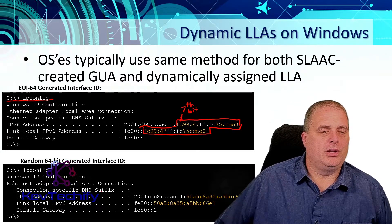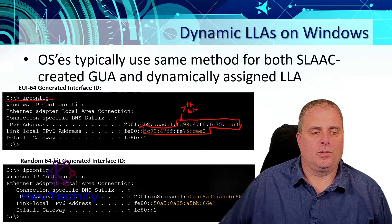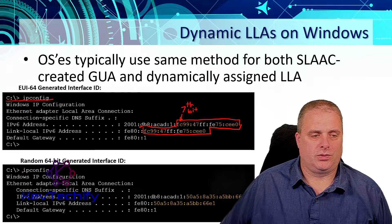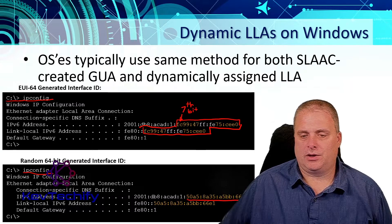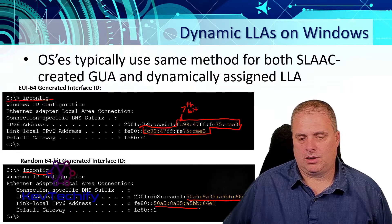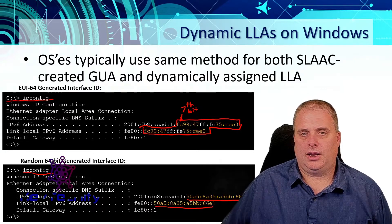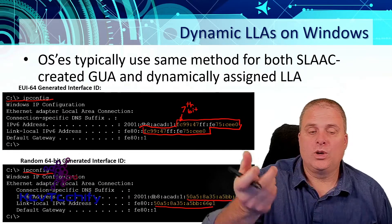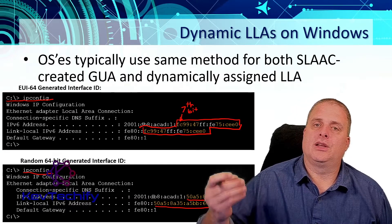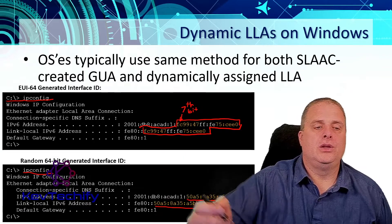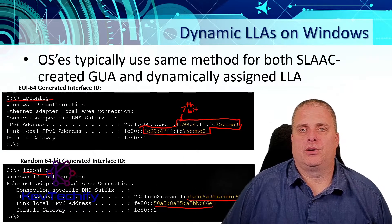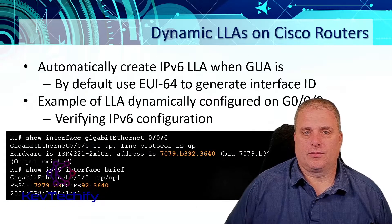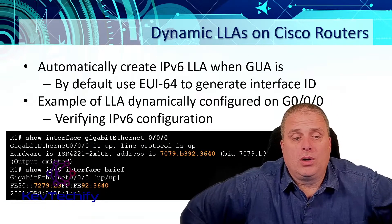If we are using the random 64-bit generation process, we typed in ipconfig here and we notice some randomly generated numbers. You can kind of tell which method your device is using. Windows Vista and forward uses the randomly generated 64-bit string as the interface ID.